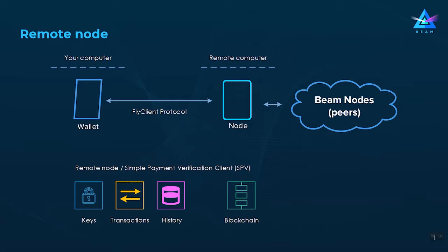If you choose the remote node option, the node is running on a different machine, and the wallet no longer has direct access to blockchain-related information. In this case the wallet has to explicitly ask the node about all blockchain-related events it wants to know about, such as UTXO state, transaction state, and the current blockchain height.